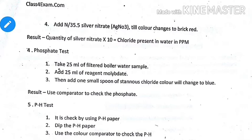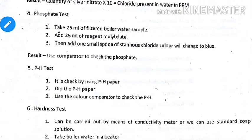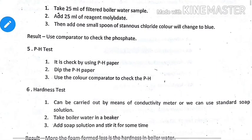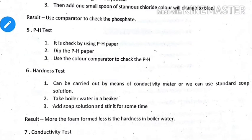To counter scale, we add phosphate into the water. The fifth test is the pH test, which is checked using pH paper and a color comparator.